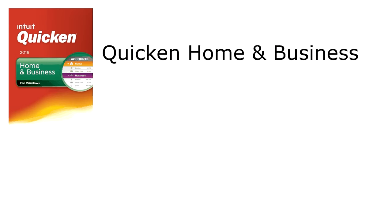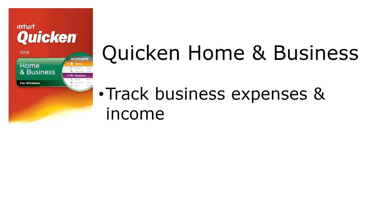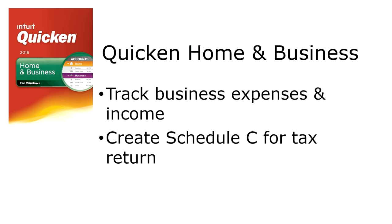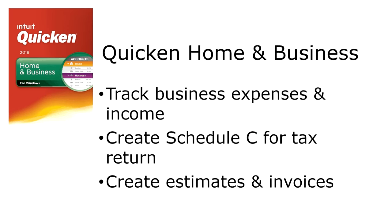Quicken Home and Business is the same as Premier except it adds tools and reports for running a small business. This is really geared towards sole proprietors and self-employed side businesses at home, but it will let you track your business income and expenses separately from your personal income and expenses. It will also help you create a Schedule C so that filling out that tax return is that much easier. A nice tool here is you can create estimates and invoices right there in Quicken, so you don't necessarily need to go all out for full-blown QuickBooks accounting software.